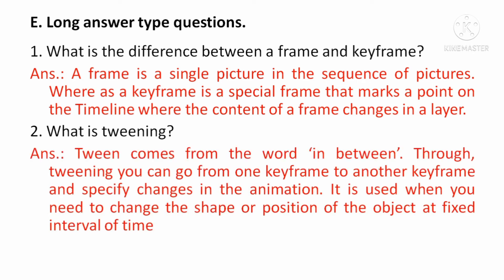What is tweening? Tween comes from the word 'in between'. Through tweening you can go from one keyframe to another keyframe and specify changes in the animation. Means, tweening के दौरान आप एक keyframe से दूसरे keyframe पर जा सकते हैं और changes को fix कर सकते हैं. It is used when you need to change the shape or position of the object at fixed intervals of time.